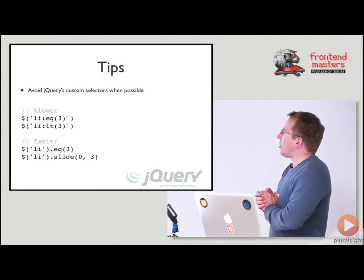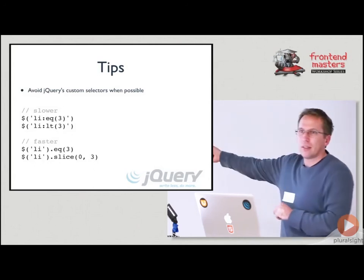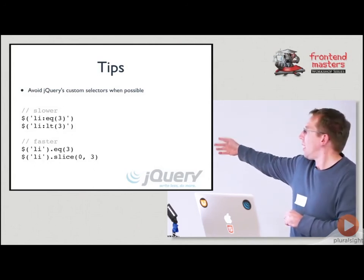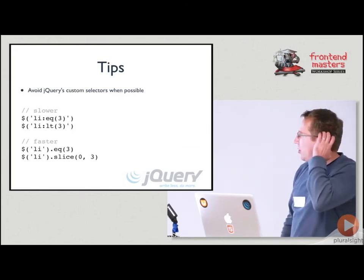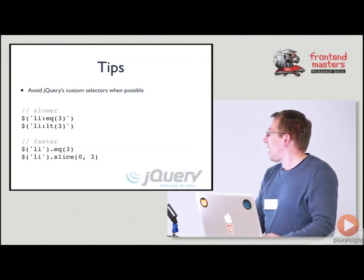Another example: `li:eq(3)` — use the `.eq()` method instead. And for `:lt(3)`, use `.slice(0, 3)` — zero up to three, meaning up to the fourth element but not including it.